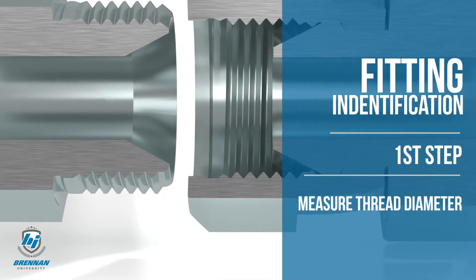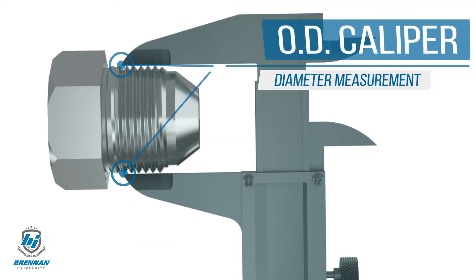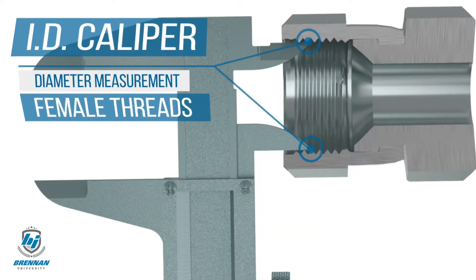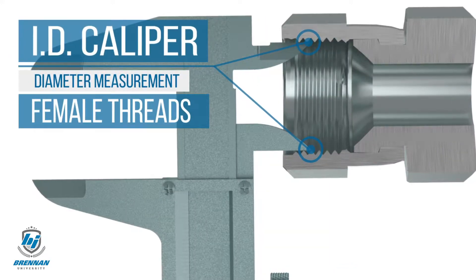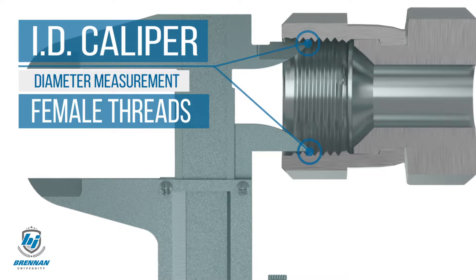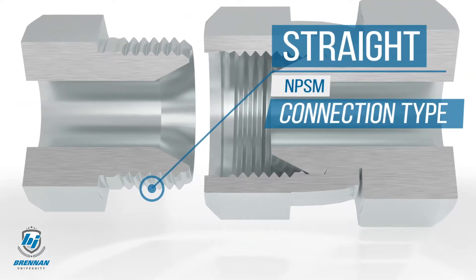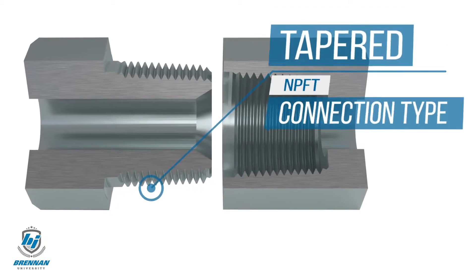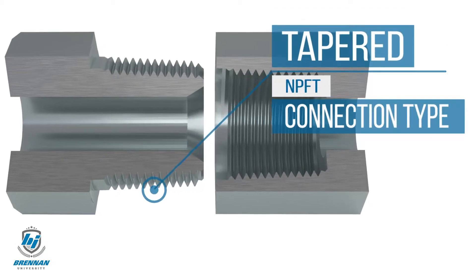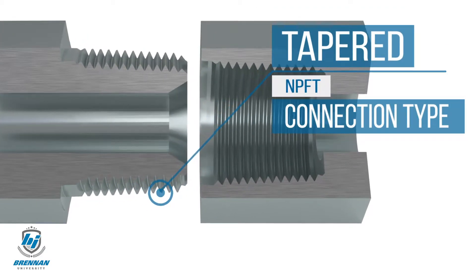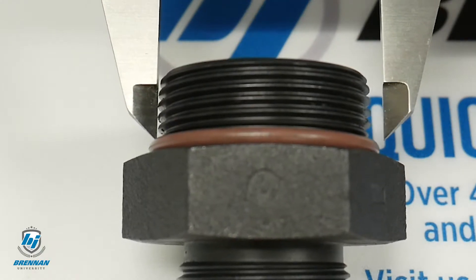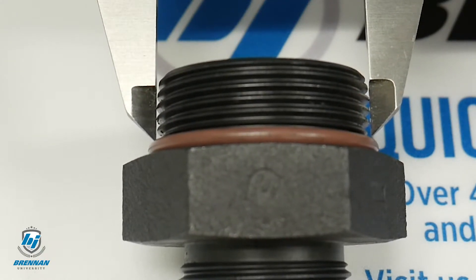The first step is to use your caliper to measure the thread diameter. First determine if the threads are parallel or tapered. Tapered threads get smaller toward the fitting end. Measure the diameter on the tops of the threads. For tapered threads, measure about the fifth thread from the end.